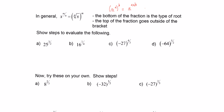To show the evaluation for 25 to the 3 over 2, we break the problem into two parts. We write the square root of 25 all in a bracket raised to 3 — the denominator 2 goes with the root and the numerator 3 goes outside as the exponent. Using order of operations, the square root of 25 is 5, and 5 cubed is 125. That's our final answer and what I expect when you show all steps.